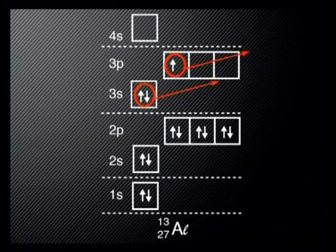The atom will have the electron distribution of an atom with only 10 electrons, like neon, again a noble gas. We say that the valency of aluminium is 3, because it gives 3 valence electrons away.